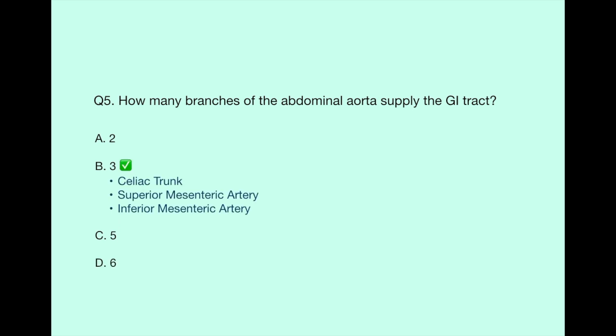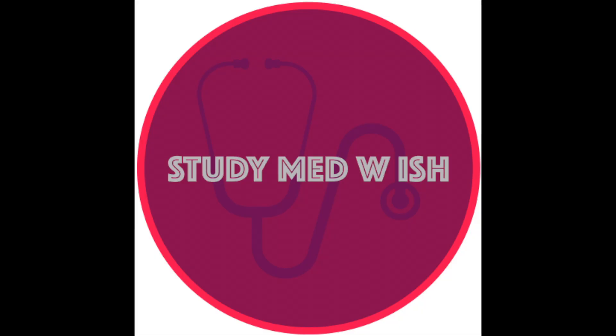Question number five: how many branches of the abdominal aorta supply the GI tract? The answer to this is pretty straightforward: celiac trunk, superior mesenteric artery, and inferior mesenteric artery. So that makes it three arteries. I hope this video was helpful. Subscribe to my channel for more quizzes and med videos. Thank you.